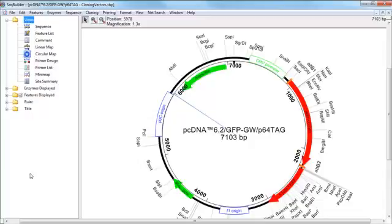And you can do that from directly within any of the graphical views, like the circular map, which is what I'm looking at now. So I'm going to show you a few different ways you can change the appearance of your map very easily.